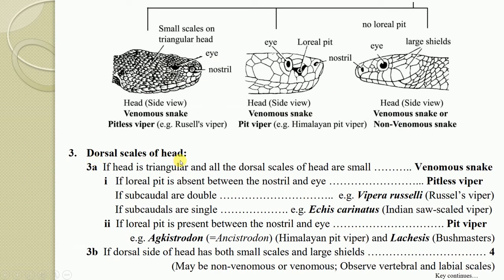Key 3A: If the head is triangular and all the dorsal scales of the head are uniformly small, this is an indication of a venomous snake — specifically a viper. All vipers are generally provided with a triangular-shaped head region with small, uniform-patterned scales. There are different kinds of vipers, so for accurate identification follow the next key.